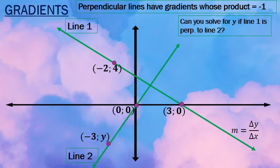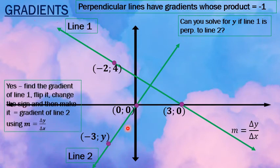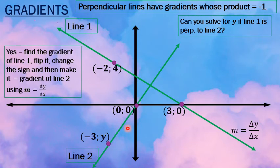What are we going to do? We're going to find the gradient of line number 1 using our normal change in y over change in x. We're going to take that answer and flip it over and change its sign. Also, note that the word flip is not mathematical. It's just easier for us to imagine a fraction flipping right over and changing sign. And then you take that answer and you equate it to y minus 0 over negative 3 minus 0. And then you've got an equation where you can solve for y.